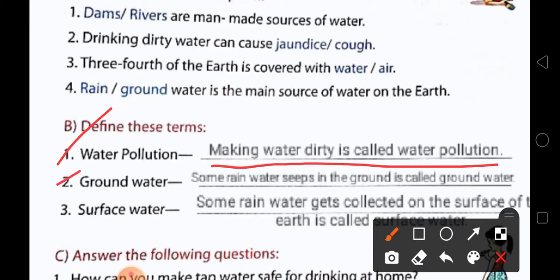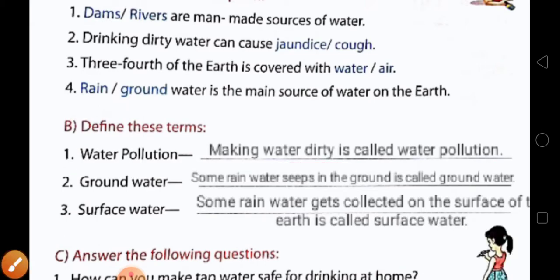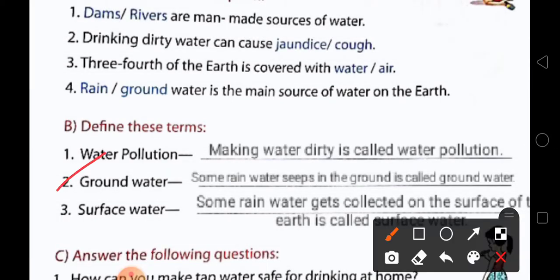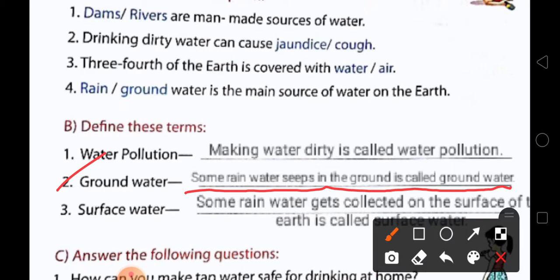Number two: ground water. Some rain water seeps in the ground is called ground water. Now we will come to the next one.